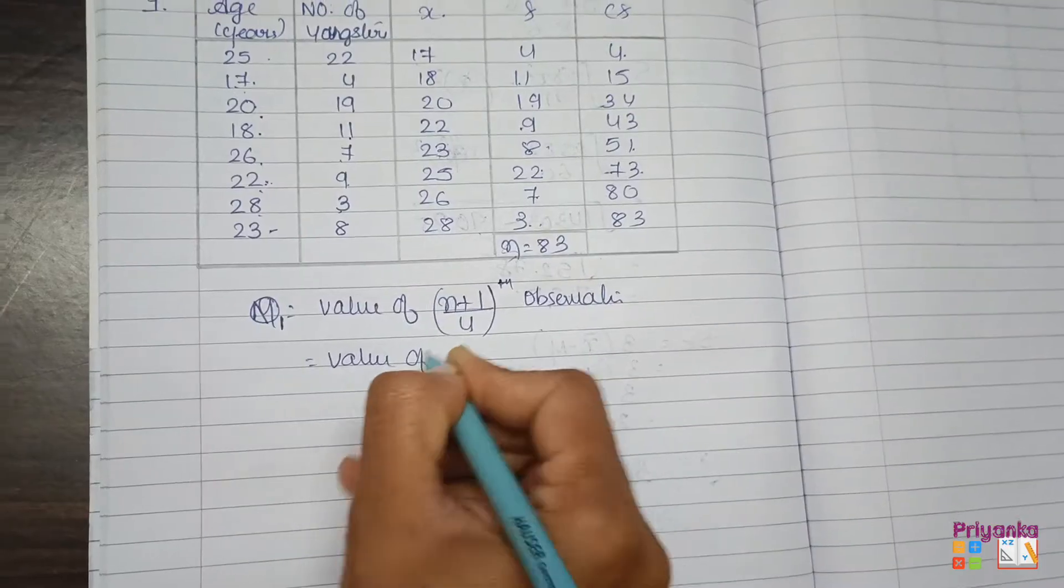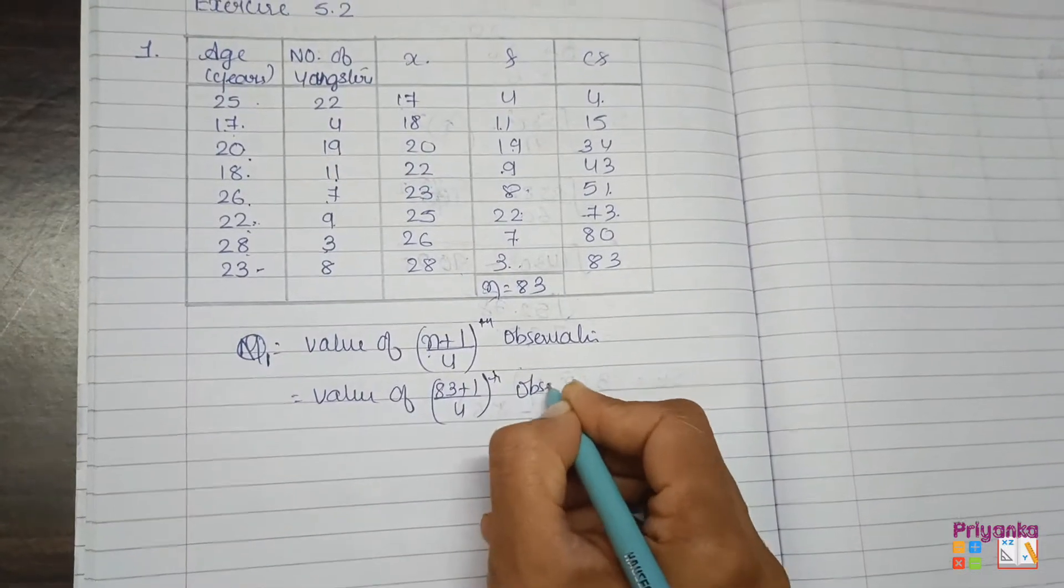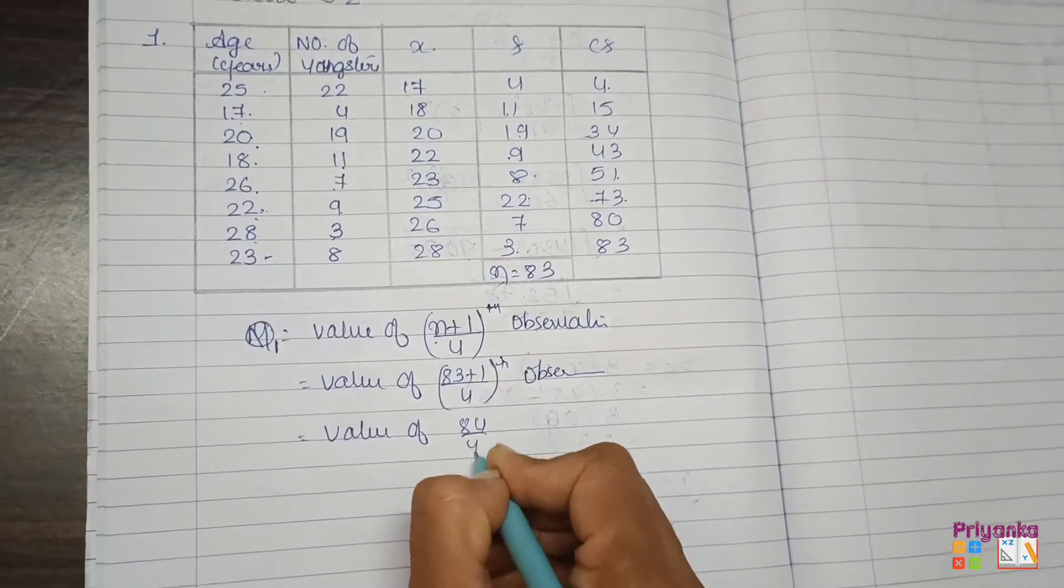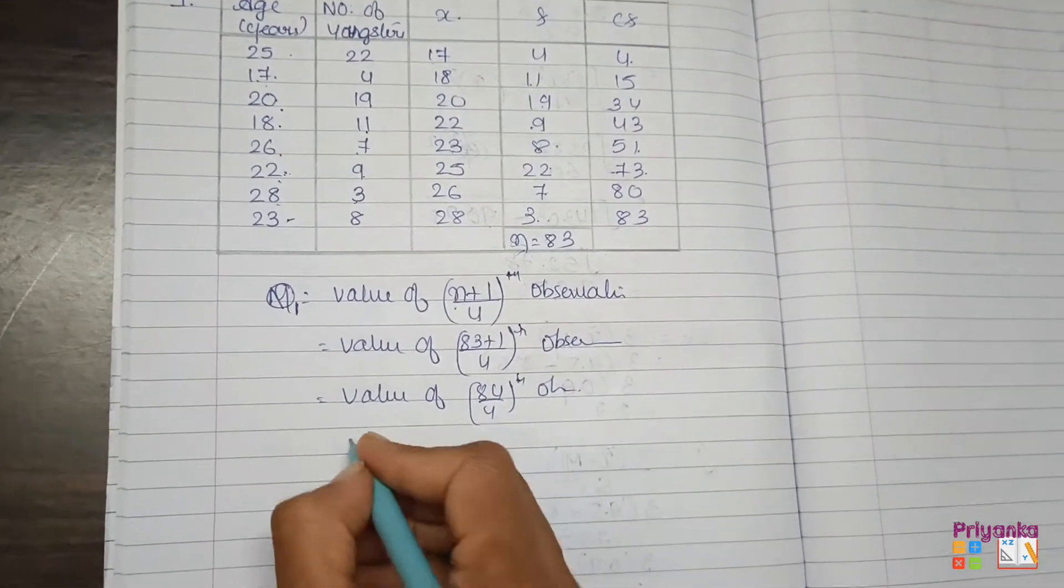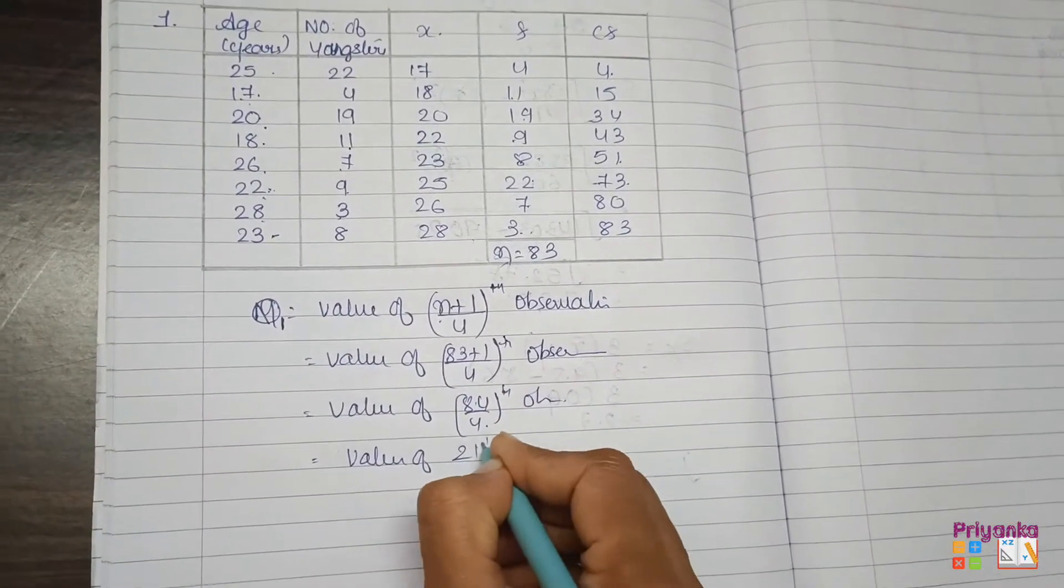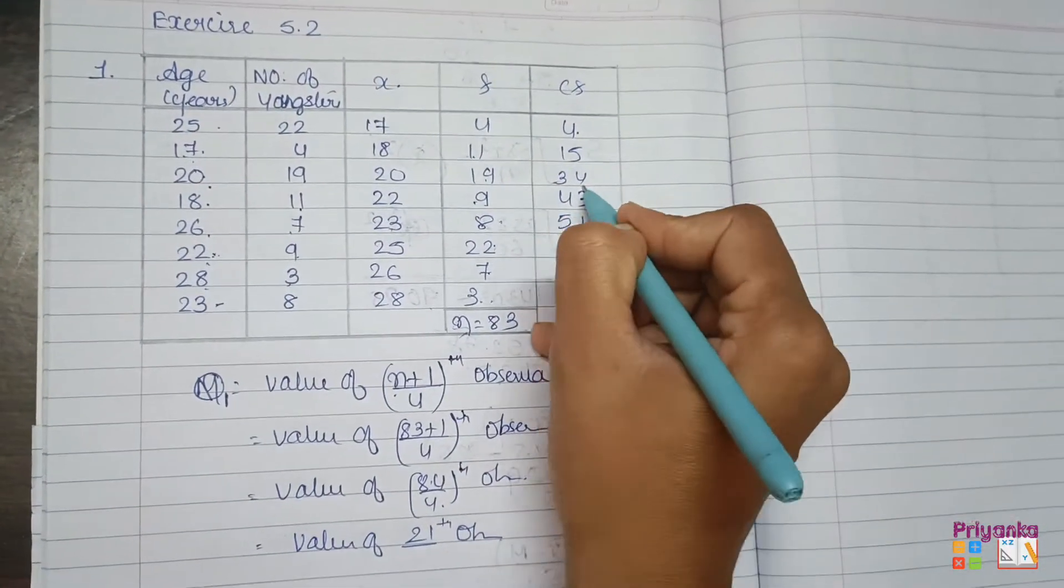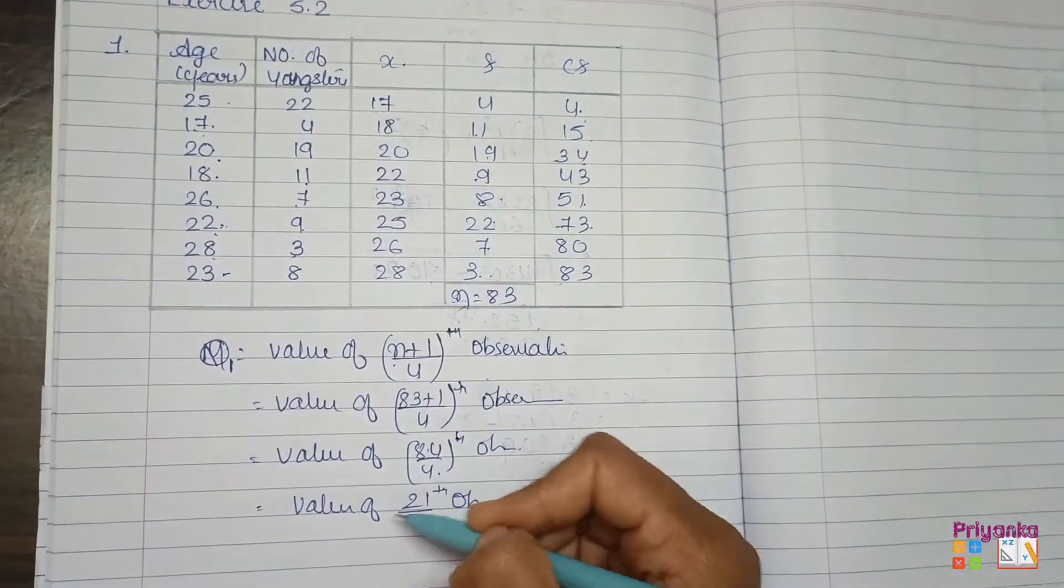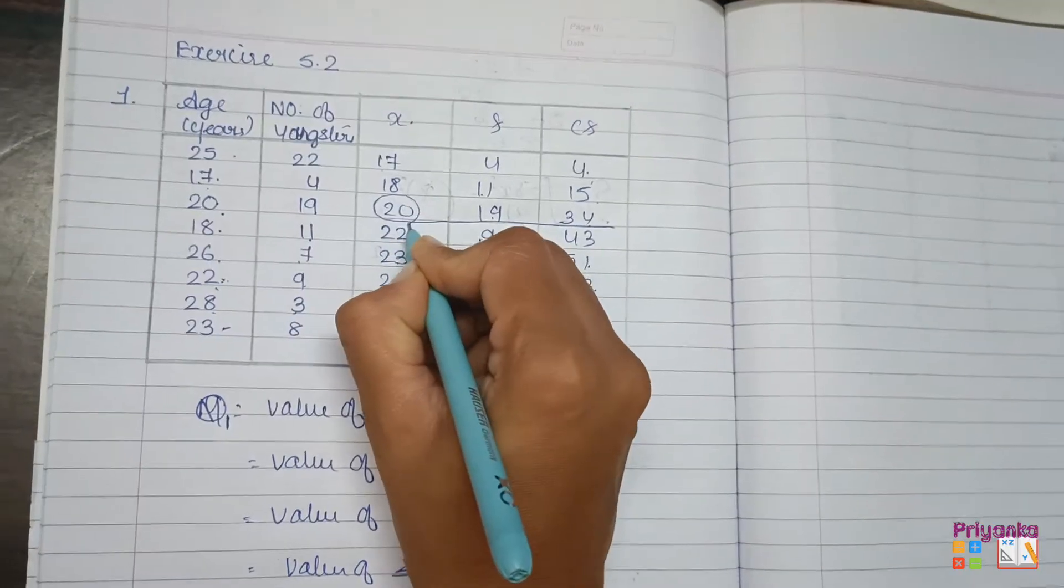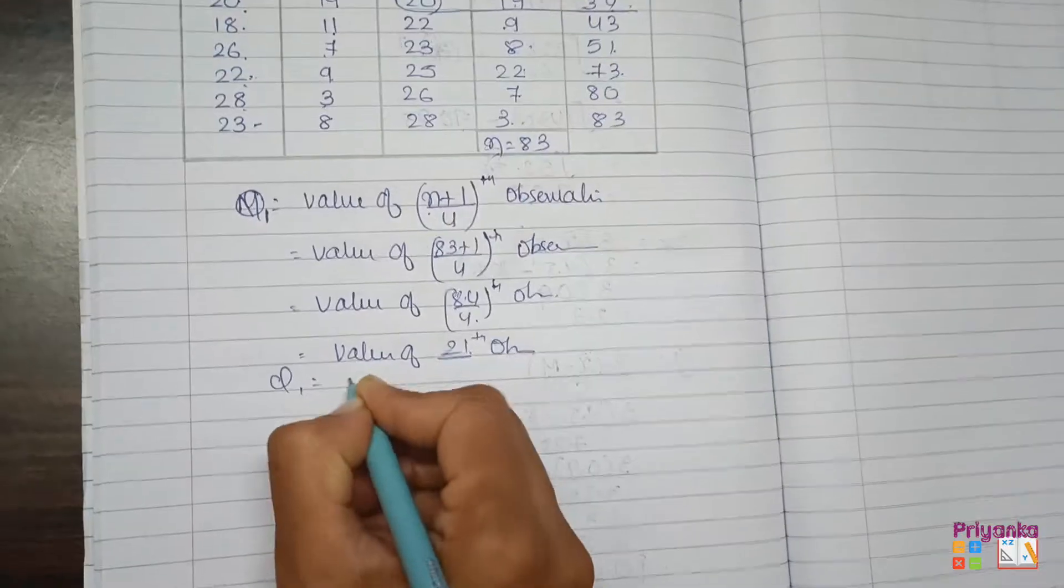So here n is 83 plus 1 divided by 4th observation, which will be 84 divided by 4th observation. 84 divided by 4th observation. Now this 21st, where does it come? Go to CF and find it: 4 and 15 are smaller numbers compared to 21, so 34 will be the CF and its observation will be your Q1. So Q1 is equal to 20.